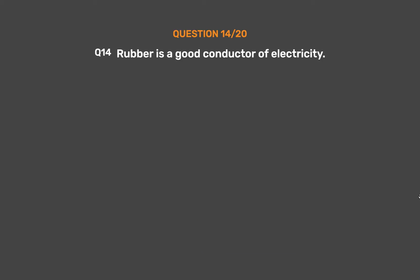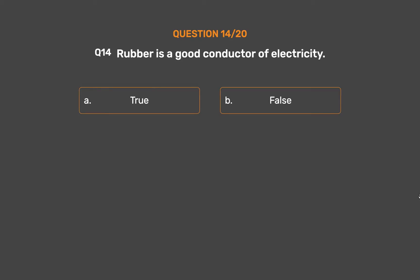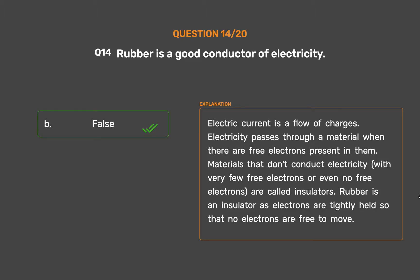Question number 14. Rubber is a good conductor of electricity. Option A: True. Option B: False. The correct answer is Option B, False. Electric current is a flow of charges. Electricity passes through a material when there are free electrons present in them. Materials that don't conduct electricity, with very few or no free electrons, are called insulators. Rubber is an insulator as electrons are tightly held so that no electrons are free to move.